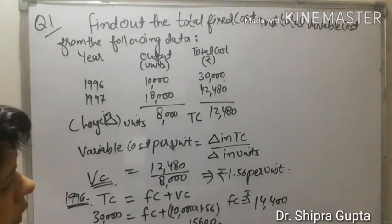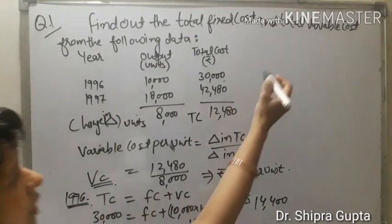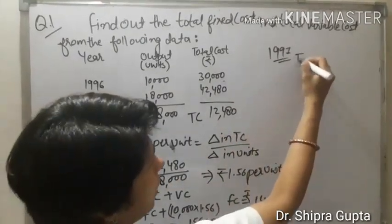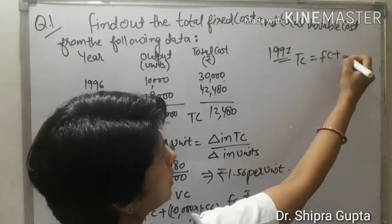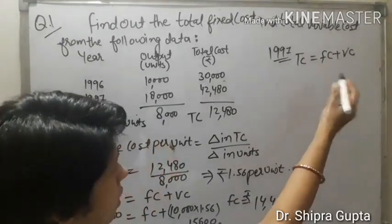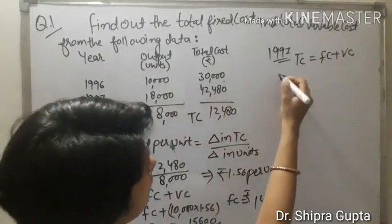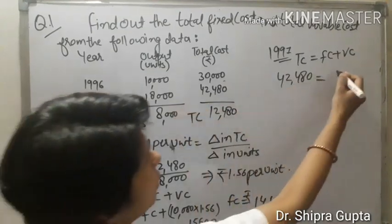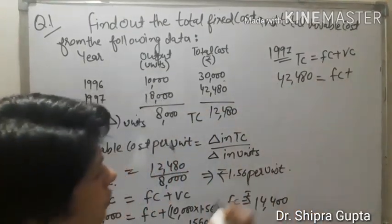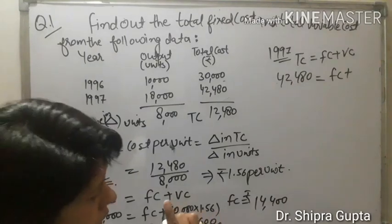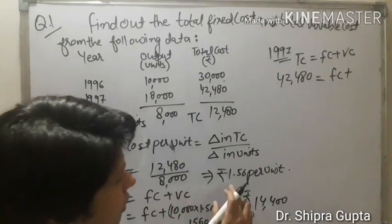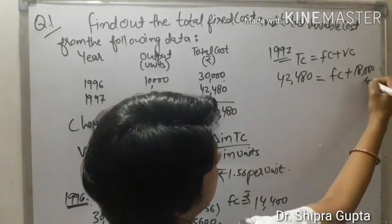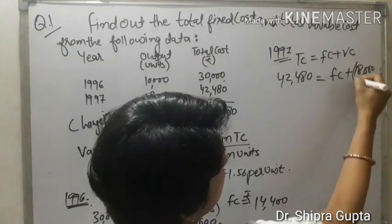We can prove it by taking another year data. We will take 1997 year data. By the same process, total cost equals fixed cost plus variable cost. Total cost in 1997 is 42,480. Fixed cost we don't know, but variable cost we know because variable cost per unit remains the same at all levels. 1.56 per unit will remain same.